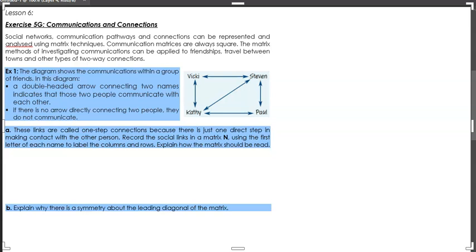So we're going to look at this example here where we can see four different people: Vicky, Stephen, Cathy and Paul. In this diagram, you can see each person is in each corner and the diagram shows the communications within a group of friends. The double-headed arrow connecting two names, that just indicates that those two people communicate with each other and if there is no arrow directly connecting two people, they do not communicate.